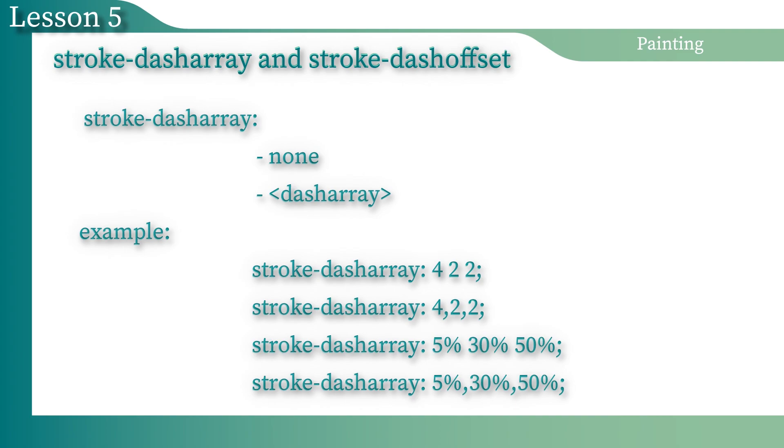The parameters of the DashArray can be percentages or numbers that will be interpreted in the user unit. If the number of the parameters in DashArray is odd, then the user agent will repeat all parameters of DashArray. As a result, the number of the parameters in DashArray will become even.